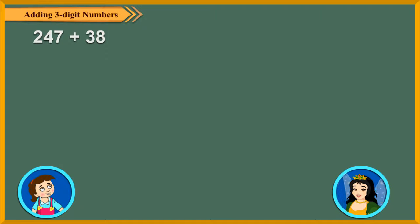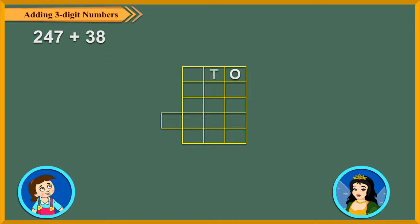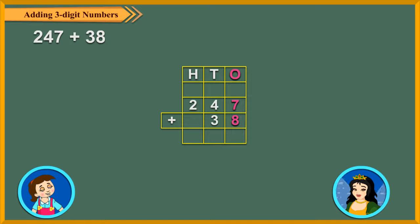Let us find 247 plus 38. As usual, arrange the numbers in columns. Then add the ones digits. 7 ones plus 8 ones is equal to 15 ones. Regroup 15 ones as 1 ten and 5 ones. So write 5 in the ones column and carry over 1 to the tens column.